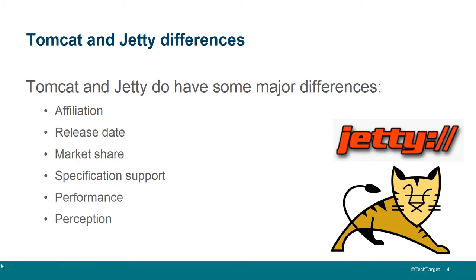So what are the differences? Well, maybe one of the key differences is their affiliation. Jetty is an Eclipse project, Tomcat is an Apache project — both open source organizations. The license is slightly different: both share the Apache 2.0 license, and Jetty is also licensed under the Eclipse license, though Tomcat doesn't share that Eclipse license.